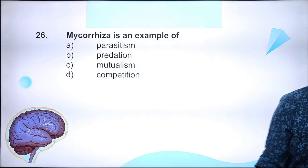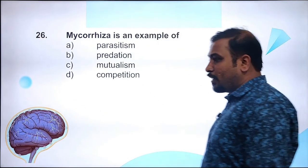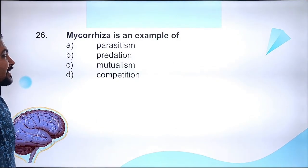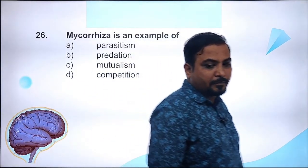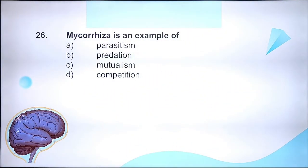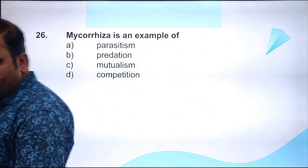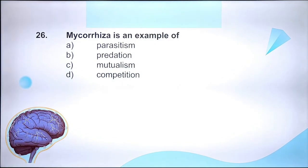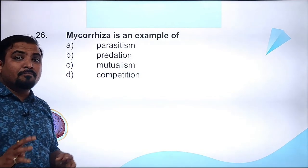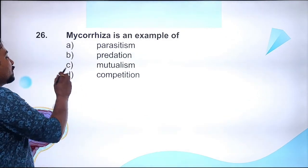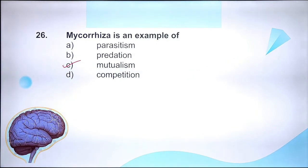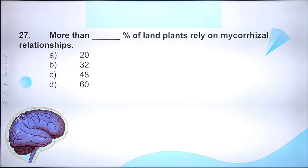Question 26: Mycorrhiza is an example of - parasitism, predation, mutualism, or competition? Mycorrhiza is a symbiotic association between fungi and roots of higher plants where both partners are benefited. Therefore it is an example of mutualism. The right answer is Option C.